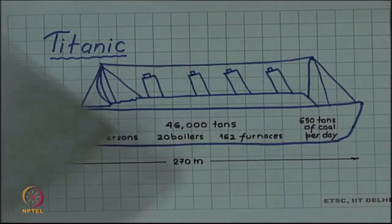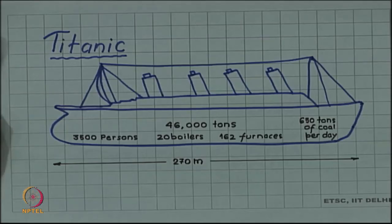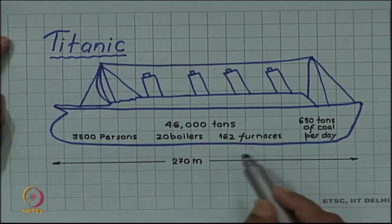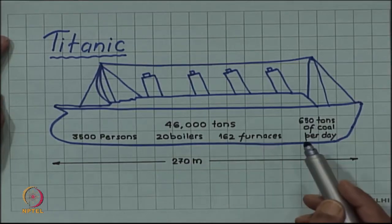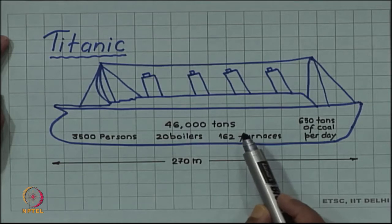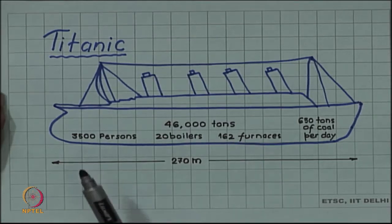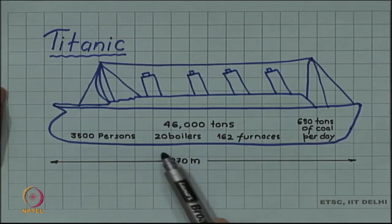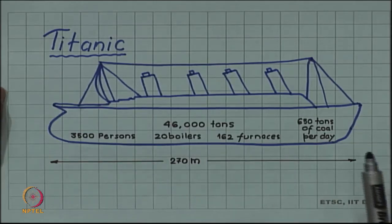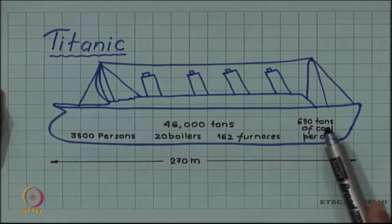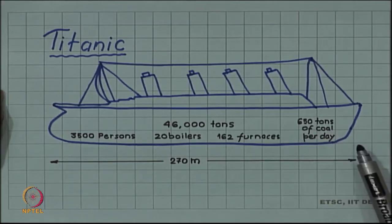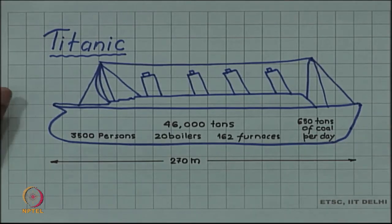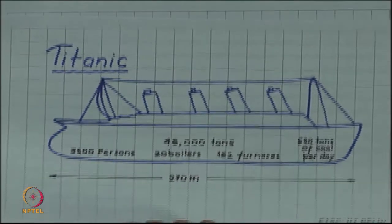Let us look at a historic failure story — that of Titanic. We all know about Titanic. It was one of the largest ships when it was built. Its weight was 46,000 tons and it was supposed to carry 3,500 persons. To run the ship there were 20 boilers, 162 furnaces, and it was consuming 630 tons of coal per day. The entire length of the ship was 270 meters, so it was a huge ship.